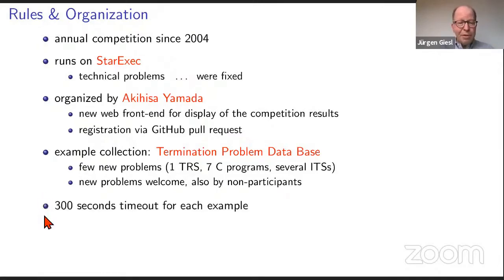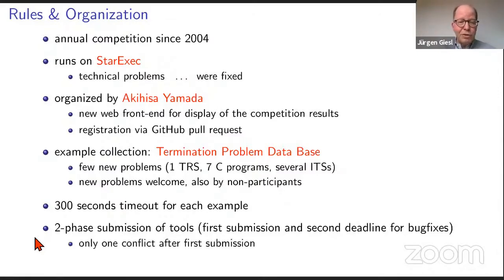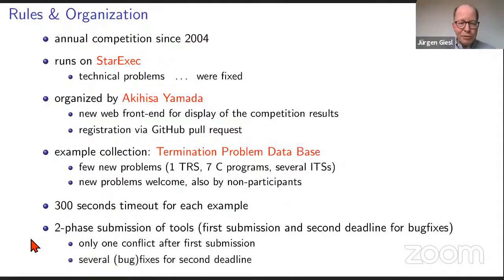For every example, the tools have a 300-second timeout. This time, we had a two-phase submission of tools: there was a first submission deadline so one could find out whether there are technical problems and detect possible bugs. It turned out there was only one conflict after the first submission — a conflict being an example where one tool says yes and another says no, showing at least one tool has a bug. Still, there were several resubmissions and bug fixes before the second deadline, which is a good idea to ensure the competition is not dominated by technical problems in the end.